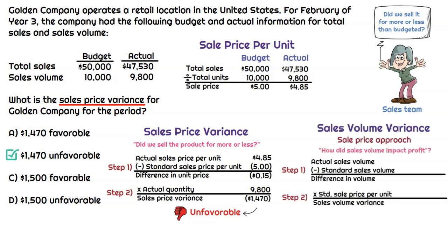Now, if you want to take this one step further and do the sales volume variance using the sales price approach, we can get the full picture on why total sales decreased. We compare the actual sales volume of 9,800 units to the budgeted sales volume of 10,000 units — the volume was short by 200 units. Multiplying by the standard price per unit of $5 gives us a sales volume variance of $1,000 unfavorable.